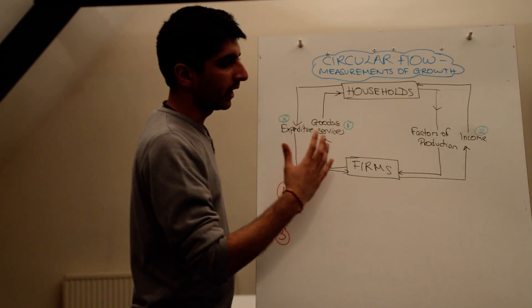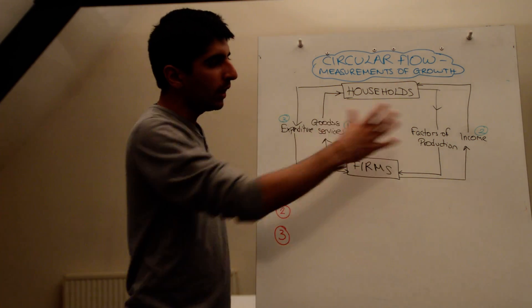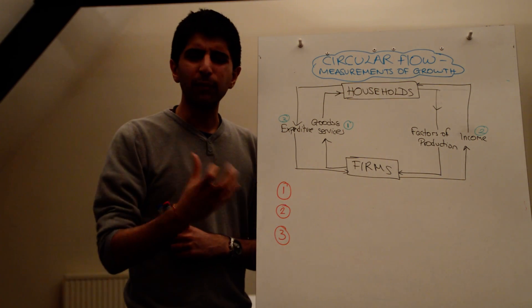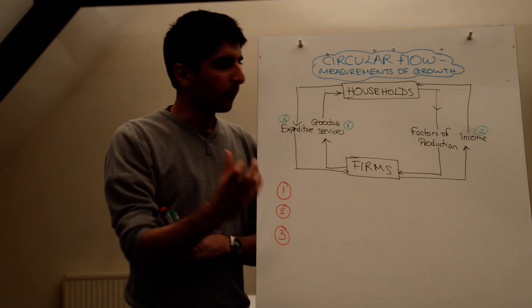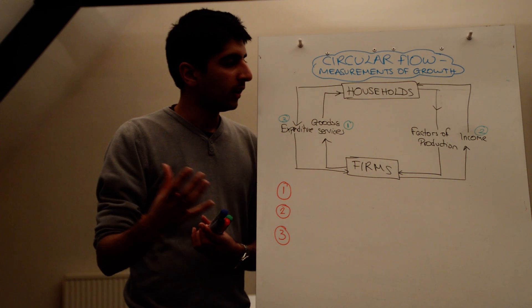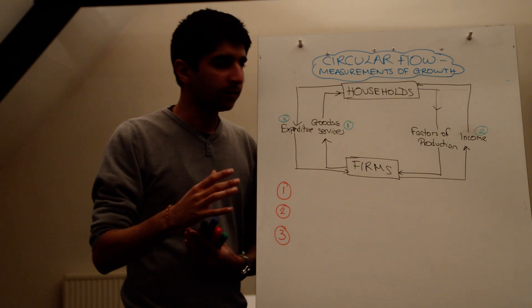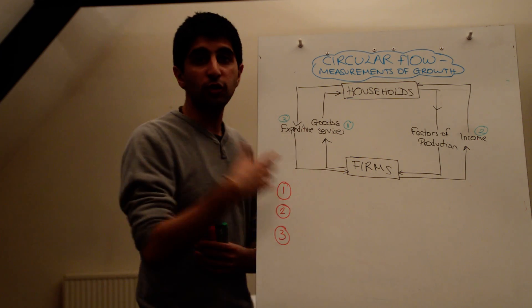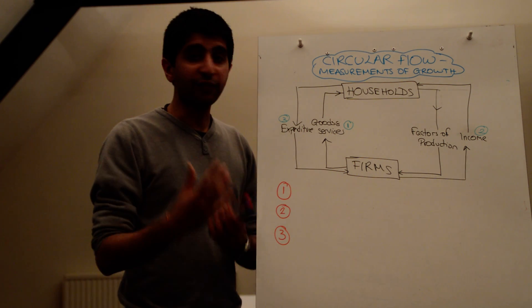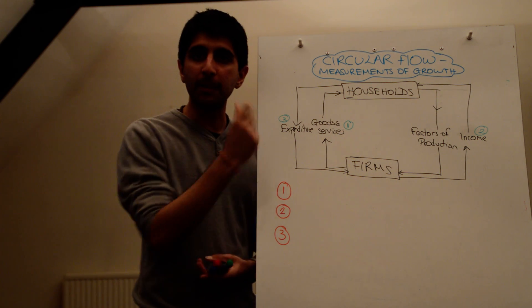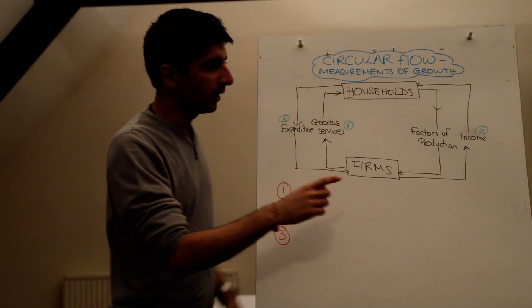But what we want to consider are the measurements. So if the circular flow gives us an idea of the flow of money in the economy, then if we measure, if we find a measure of that flow, and we can say that in one year the flow actually increased, or the flow actually decreased, then that can give us a measure of growth. So if the flow managed to increase in force, then maybe in that year growth has increased. In which case, great, we need to find a measure of this flow.